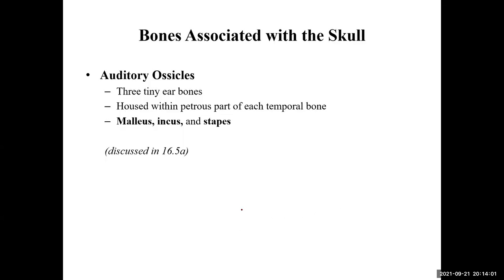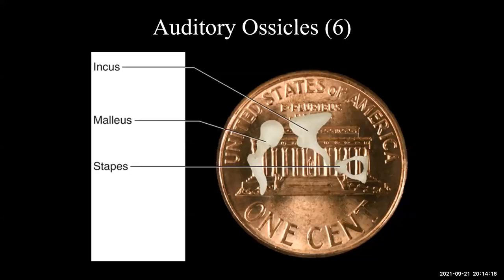The auditory ossicles — the incus, malleus, and stapes — are the three smallest bones in your body. They can be pictured on a penny to show their scale. We'll go into more detail in Chapter 16. A helpful memory tip: the stapes looks like a staple.